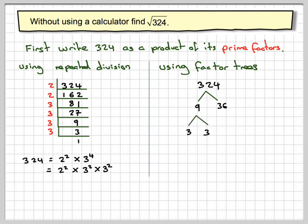9 splits up into 3 times 3. 36 splits up into 6 times 6. These are prime numbers, so stop here. 6 splits up into 2 times 3. And again here, 6 up to 2 times 3.